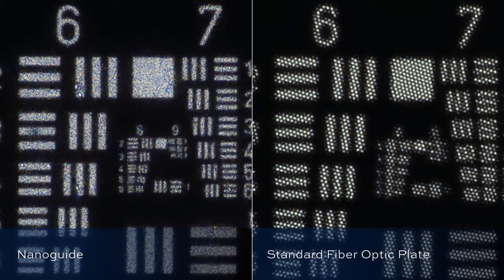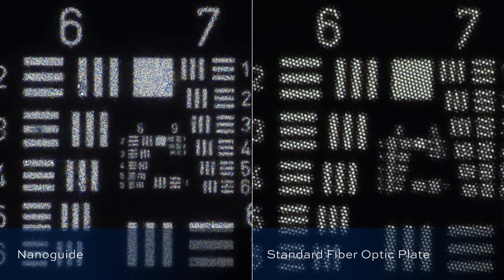NanoGuide is capable of resolving much finer detail than the best fiber optic available. You can clearly resolve Group 8 Element 2 with NanoGuide which is 287 line pairs per millimeter.